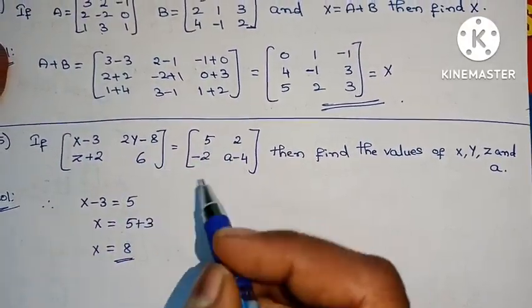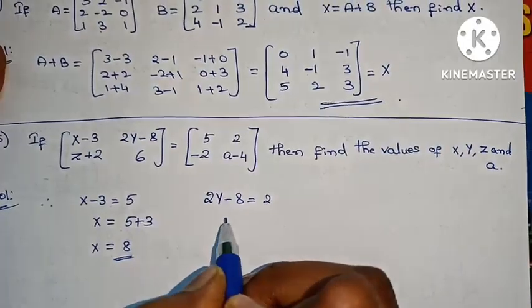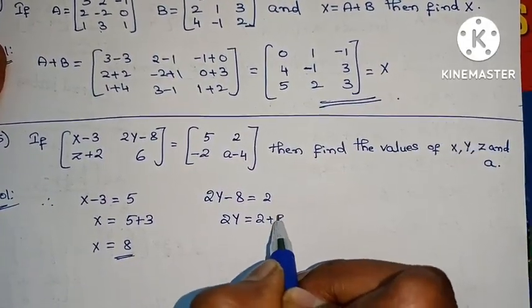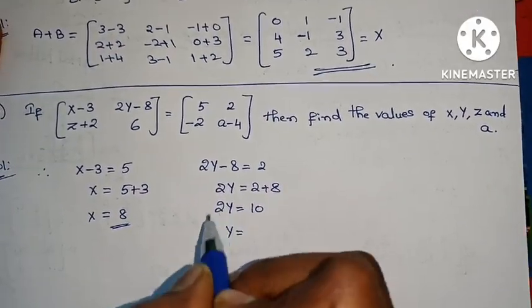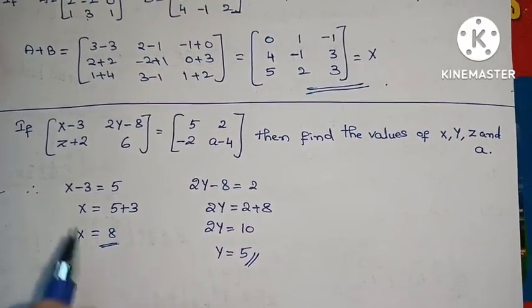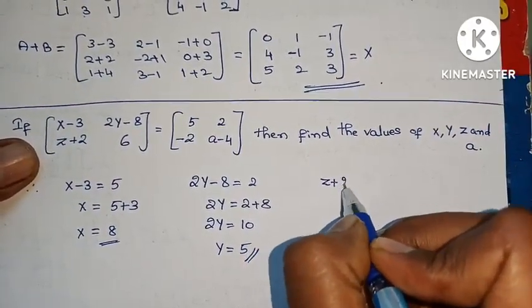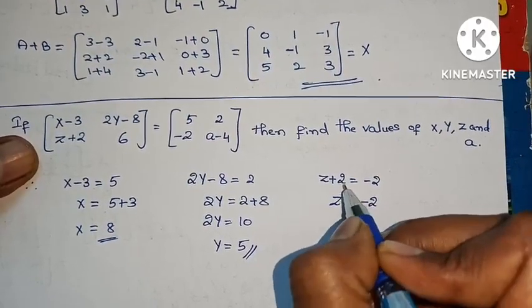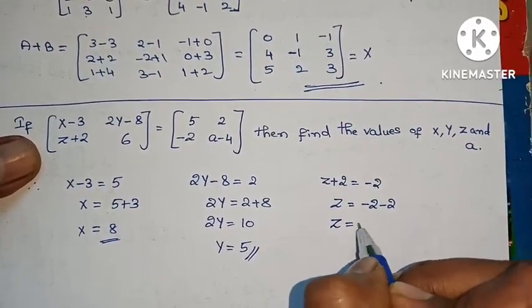Second term: 2y minus 8 equals 2, and 2y equals 2 plus 8, so 2y equals 10, and y equals 5. Next term: z plus 2 equals minus 2, so z equals minus 2 minus 2, giving z equals minus 4.